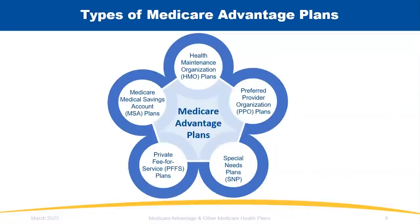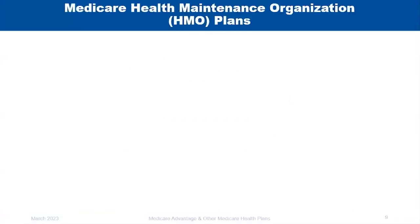There are five major Medicare Advantage plan products: Health Maintenance Organizations (HMOs), Preferred Provider Organizations (PPOs), Special Needs Plans (SNPs), Private Fee-for-Service plans, and Medicare Medical Savings Account (MSA) plans.